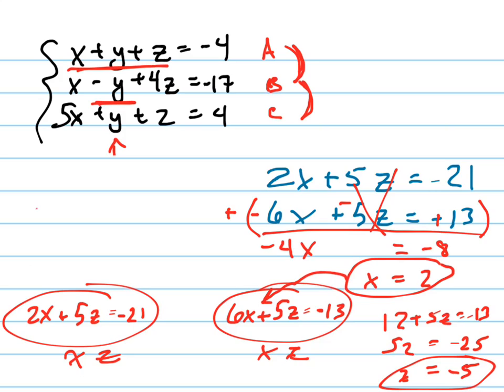I can plug them in up here to any one of those, so it doesn't matter which one. Let's plug it into the first one since that's pretty easy and solve for Y. So 2 minus 5 is negative 3 plus Y equals negative 4. Add 3 to both sides. Y equals negative 1.